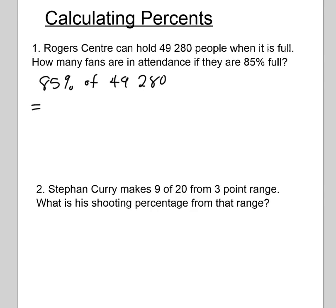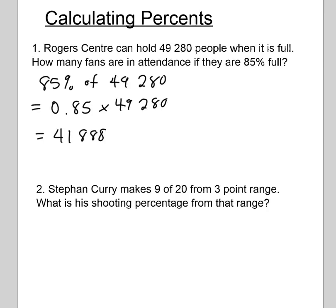Remember, when you work with percent you always want to turn that percent into a decimal. Percent means per hundred, so 85 percent doesn't mean 85 — it means 85 out of a hundred. You either do 85 divided by 100, or write it as 0.85, which is moving the decimal place twice. Eighty-five percent is not the same as the number 85, so be really careful. Then punch that into your calculator and you get 41,888 — that's how many fans would be in attendance when the dome is 85 percent full.